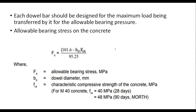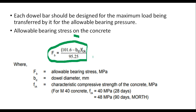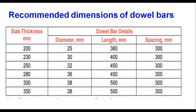Beta in this equation is given by the fourth root of (Kmds × Bd) / (4EI), where Kmds is the modulus of dowel support with a suggested value of 450,000 MPa per meter in IRC 58. Each dowel bar should be designed for the maximum load being transferred for the allowable bearing pressure. Allowable bearing pressure in concrete is determined by the equation where Fb is allowable bearing stress, Fck is characteristic compressive strength of concrete in MPa, and Bd is the diameter of the dowel bar. The design reduces to maintaining Fb_max ≤ Fb. The recommended dimensions of dowel bars in the IRC code are given in a table from which you can choose diameter, length, and spacing based on slab thickness.